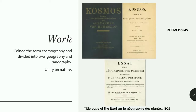He coined the term Cosmography and divided it into two parts: Geography and Uranography. Basically, Uranography is descriptive astronomy — the study of celestial bodies. It is related to the cosmos or cosmic things, while Geography, as we all know, is mostly based on terrestrial things.